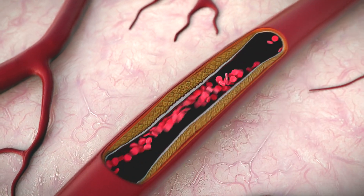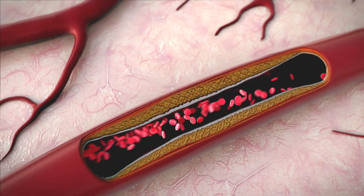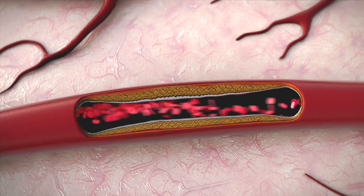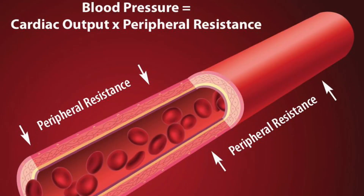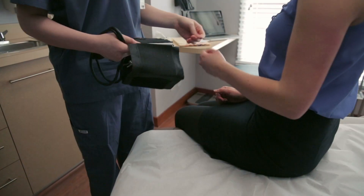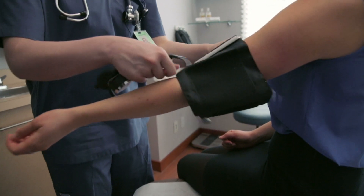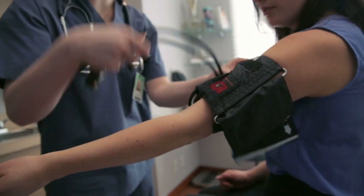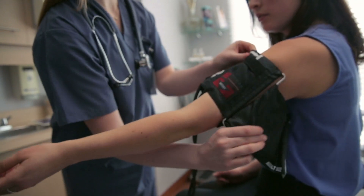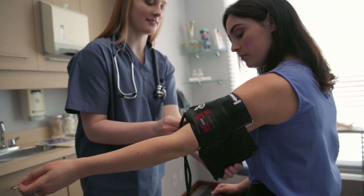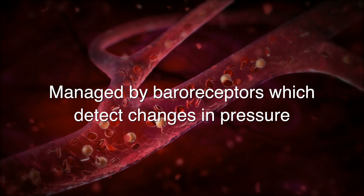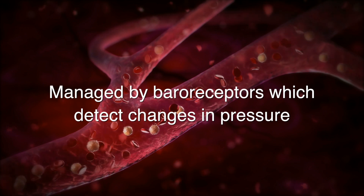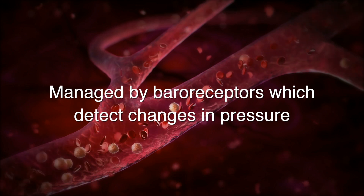Blood pressure is the measure of force exerted by circulating blood against arterial walls. It is calculated by multiplying cardiac output and total peripheral resistance. It can change in response to activity, nutrition, body size, obesity, health status, and the presence of blood vessel disease. It is internally managed via baroreceptors in large arteries that can detect changes in pressure.